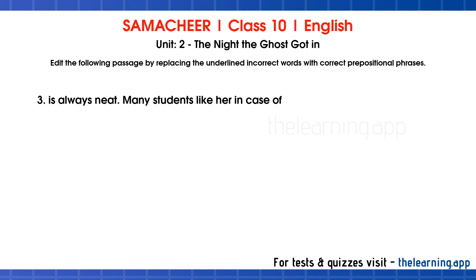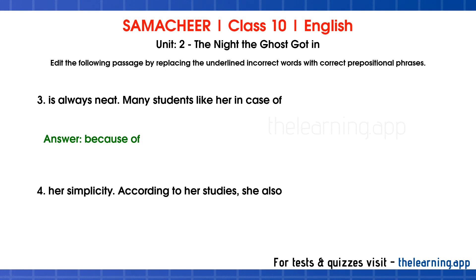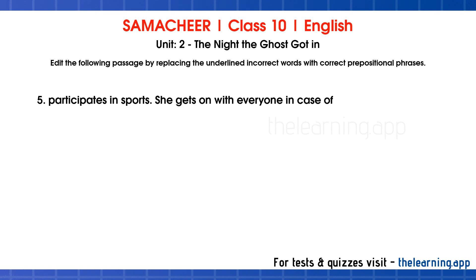Question 3: Is always neat. Many students like her in case of — correct answer is: because of. Question 4: Her simplicity. According to her studies, she also — correct answer is: in addition to. Question 5: Participates in sports. She gets on with everyone in case of — correct answer is: regardless of.